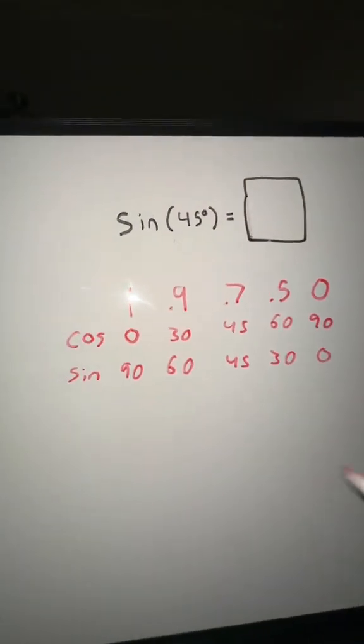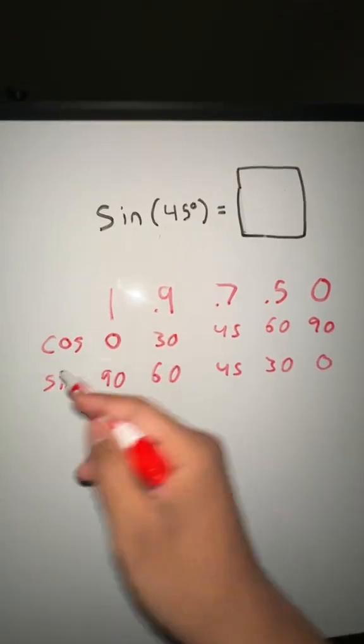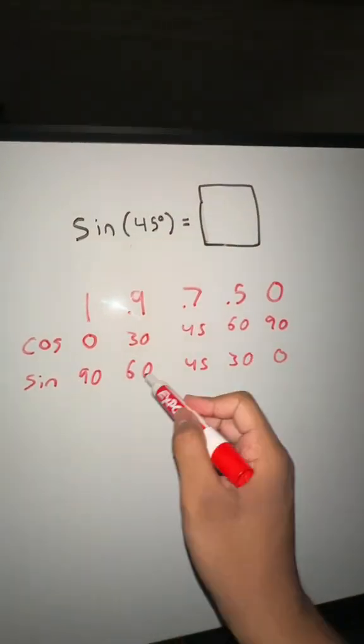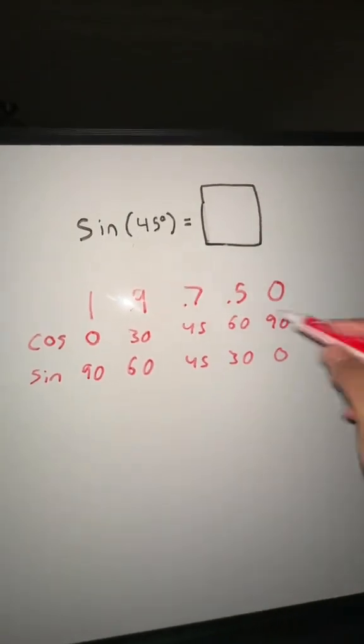And so like this, this just tells you that your cosine of 45 will be 0.7 approximately, or sine of 60 will be about 0.9. So you can use these when you're doing calculations.